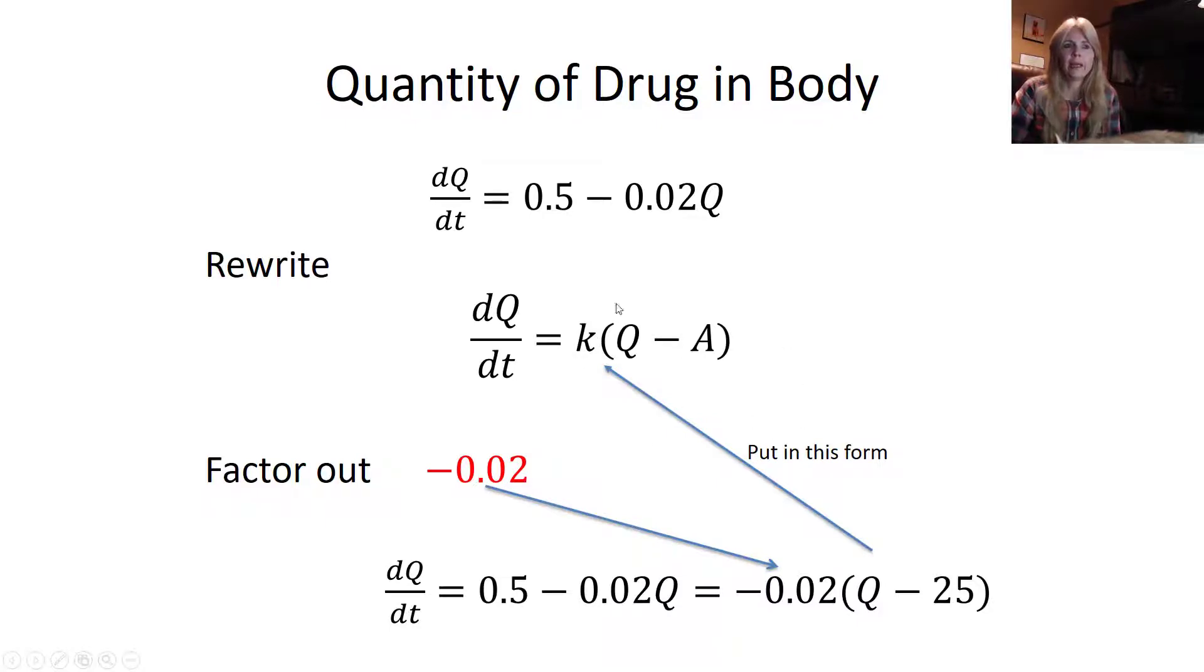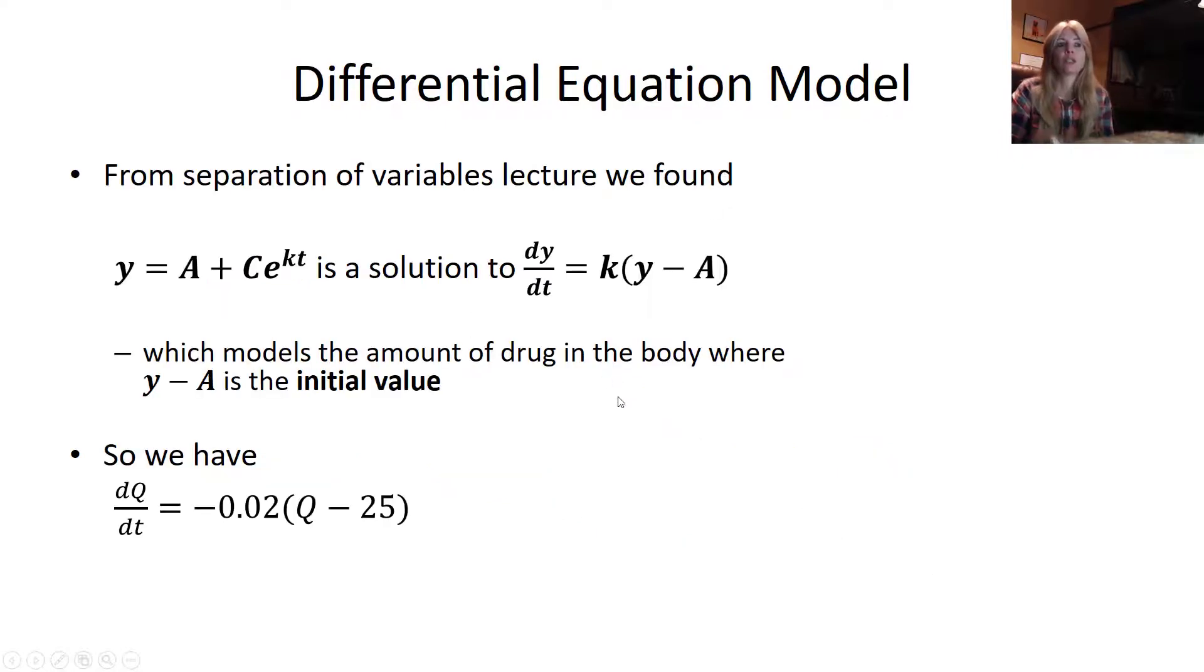And you can already see that A is that 25, my equilibrium. So if I factor out negative 0.02, I divide 0.5 by negative 0.02, that's where I get the negative 25. I divide negative 0.02 Q by negative 0.02, and that's where I get Q. So now this is exactly in this form.